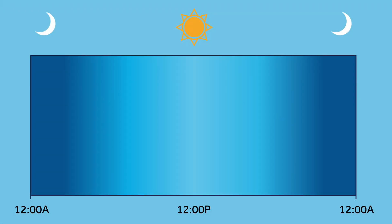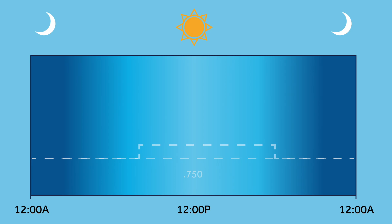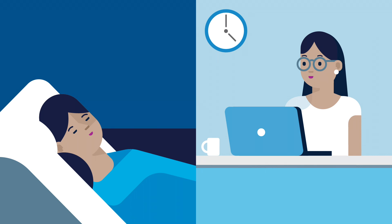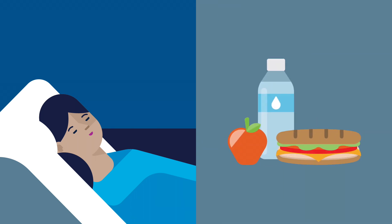Over time, the basal rates in the basal pattern may need to be changed or added to adjust to the body's various insulin needs. Once a basal pattern is set correctly, your glucose levels should stay stable, so things like sleeping late, eating late, or even skipping a meal can happen without glucose going too high or too low.